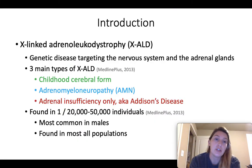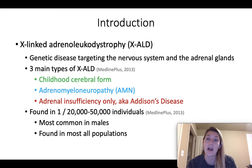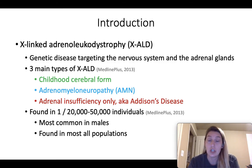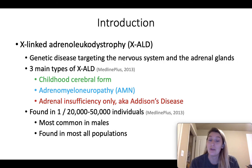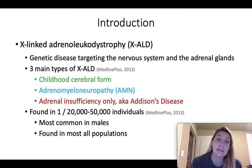So a brief introduction: X-linked adrenoleukodystrophy, or XALD, is a genetic disease that specifically targets the nervous system and the adrenal glands. There are three main types of XALD: the cerebral childhood form, adrenomyeloneuropathy (abbreviated AMN), and adrenal insufficiency only, which is also known as Addison's disease.